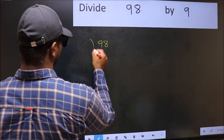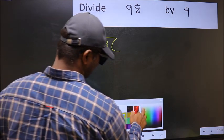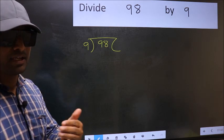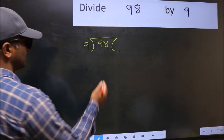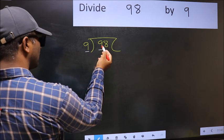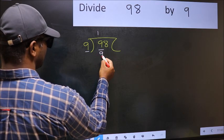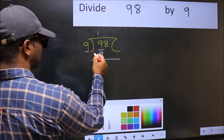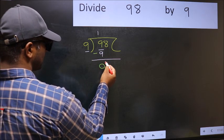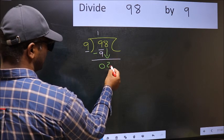98 and 9 here. This is your step 1. Next, here we have 9 and here also 9. When do we get 9 in 9 table? 9 once 9. Now we should subtract. 9 minus 9, 0. After this, bring down the beside number. So 8 down.